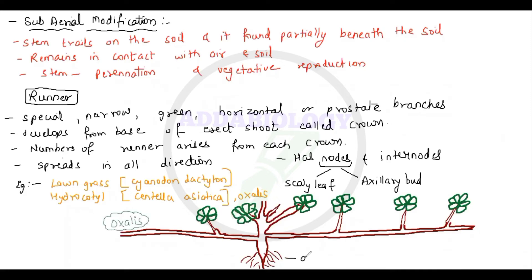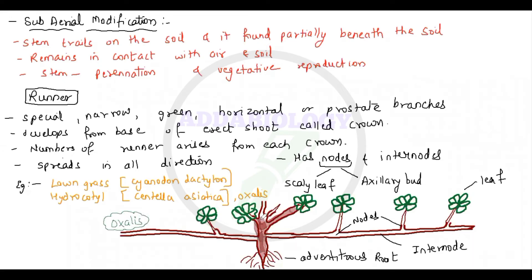Each separated plant will act as its own crown. An example of this is Oxalis, which has adventitious roots, nodes, internodes, and leaves. Remember — runners are partially below the soil and partially above the soil; at nodes they are attached to the soil surface.